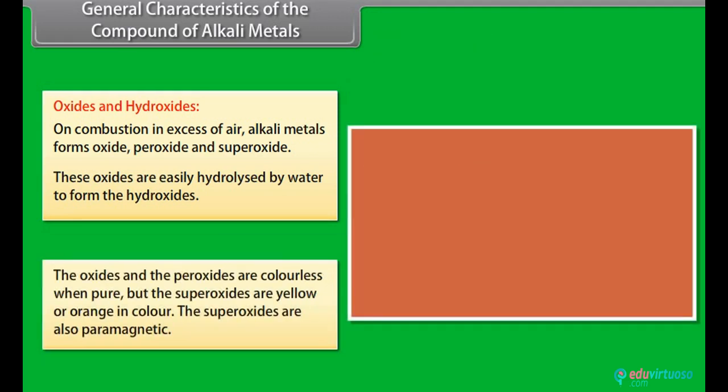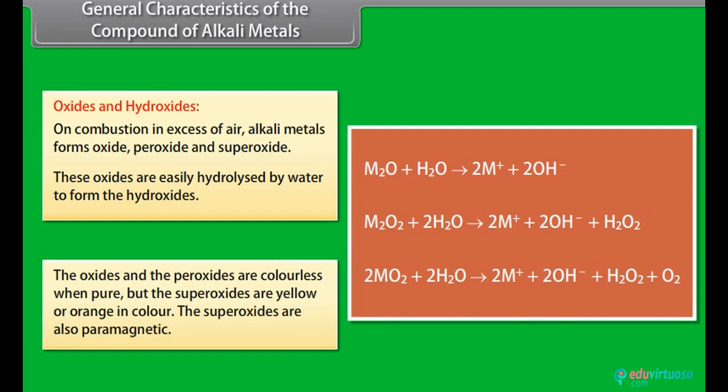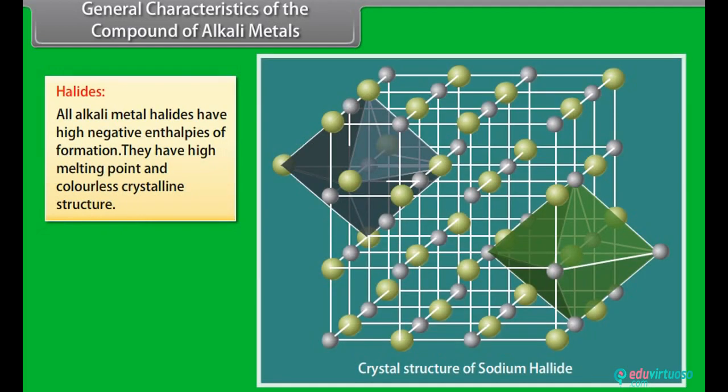These oxides are easily hydrolyzed by water to form the hydroxides. The oxides and peroxides are colorless when pure, but the superoxides are yellow or orange in color. The superoxides are also paramagnetic.